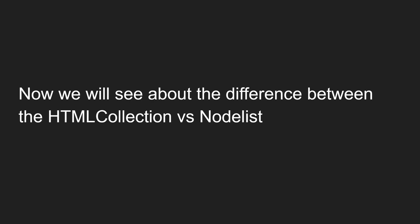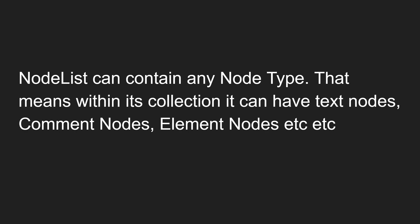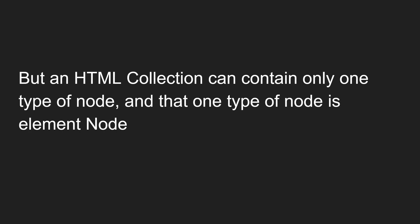Let's see the difference between HTMLCollection versus NodeList. A NodeList can contain any node type — we have seen eight different types of nodes: element nodes, comment nodes, text nodes, etc. So within a NodeList collection it can have text nodes, comment nodes, element nodes, and so on. But an HTMLCollection can contain only one type of node, and that is nothing but an element node.